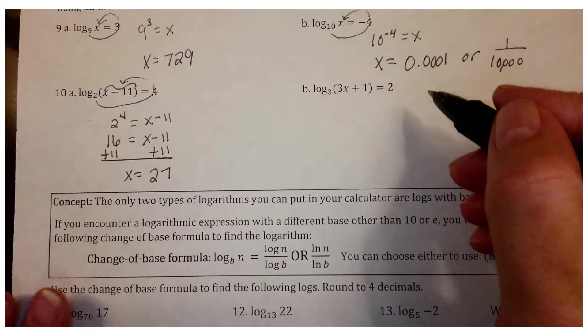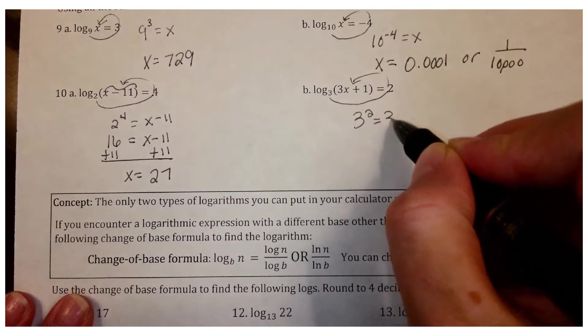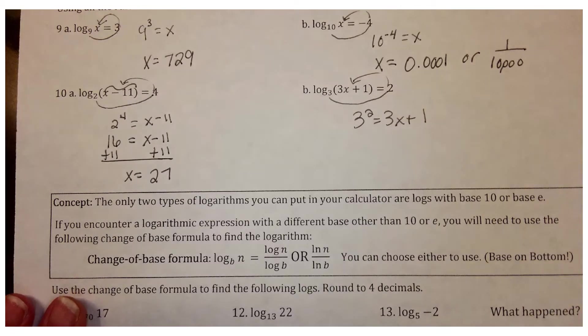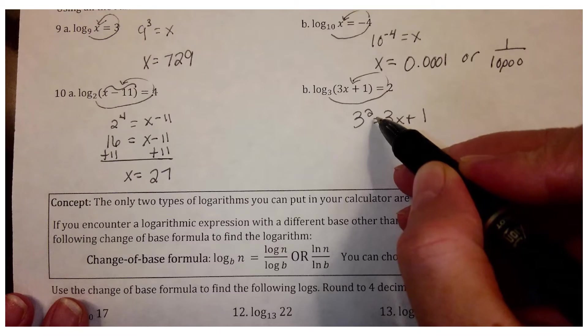And for our last one, 3 to the 2nd equals 3x plus 1. So simplify the expression first, the exponential expression.